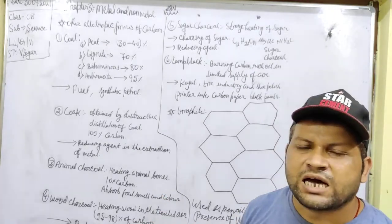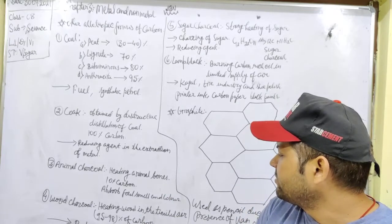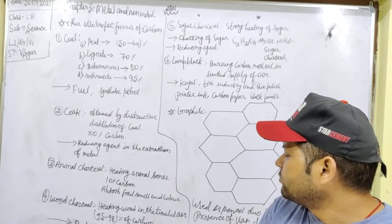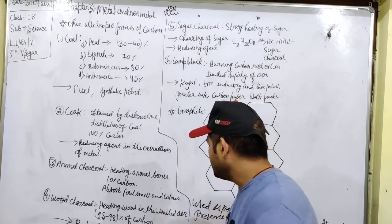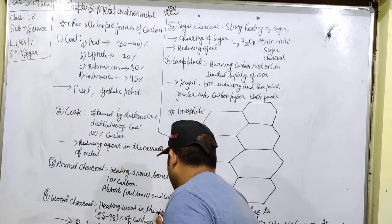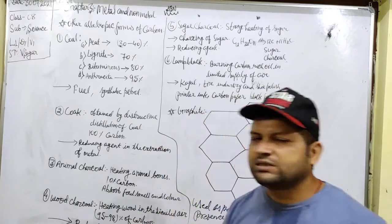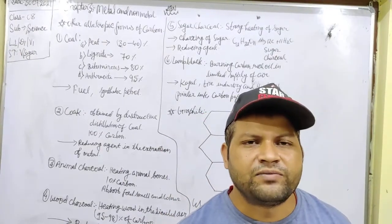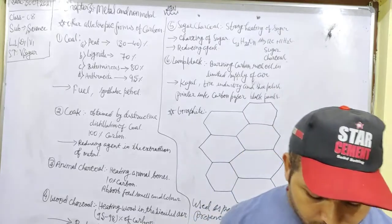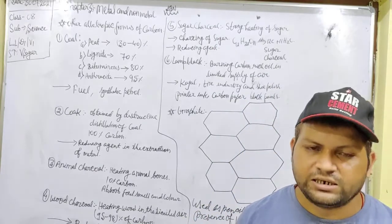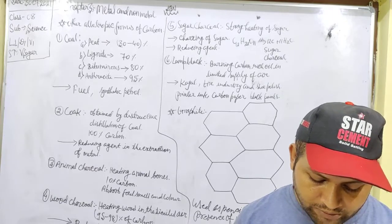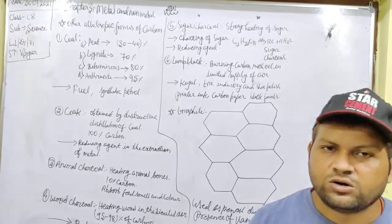In the next, wood charcoal. Wood charcoal is obtained from the hard heating of wood in the limited supply of air. It contains 95 to 98% of carbon. And it is used as a reduction agent in the manufacturing and in making gas mask.